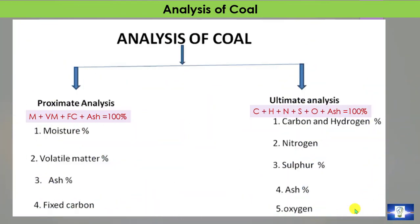The analysis of coal is of two types: Proximate Analysis and Ultimate Analysis. In Proximate Analysis, we analyze the coal as moisture, volatile matter, fixed carbon, and ash.